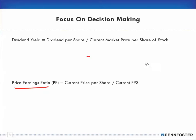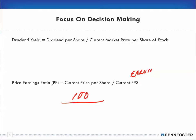The big one — and the last one — is the PE ratio. The PE ratio is the current price per share divided by the current earnings per share (EPS). EPS has been covered in a previous focus on decision-making, but basically it's your earnings divided by shares.